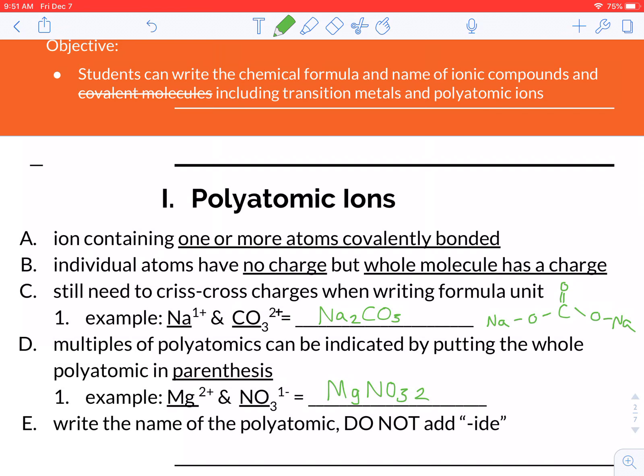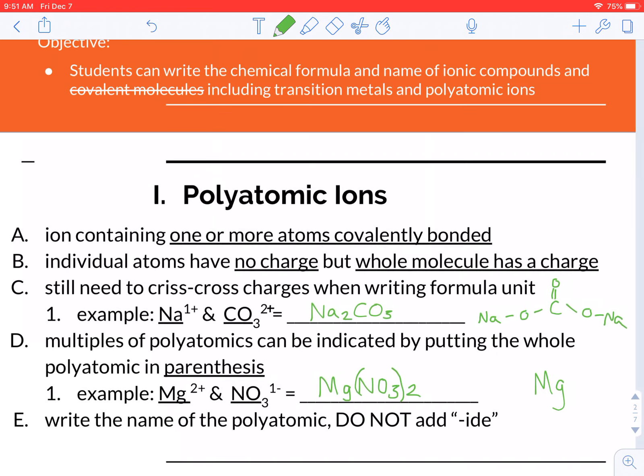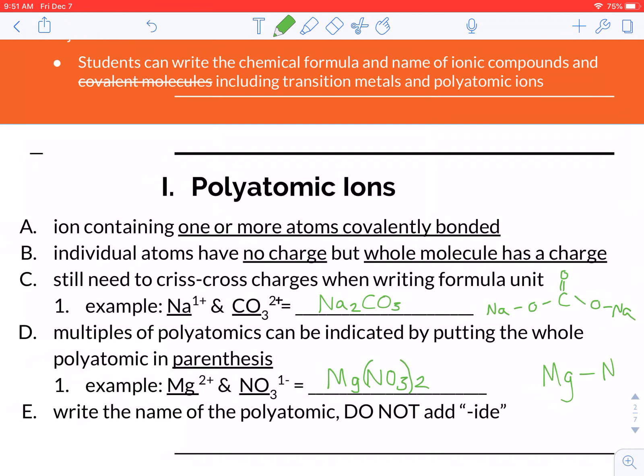So if you ever run into this, just put a parenthesis around the polyatomic ion to show you that this would actually be a magnesium, and it's going to be bonded to two NO3s.